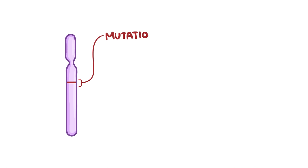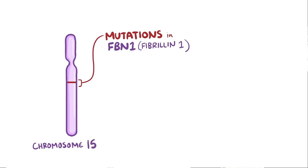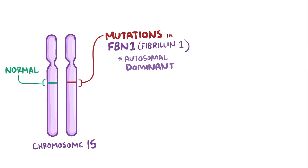Marfan syndrome is caused by mutations in a gene called FBN1, or fibrillin 1, on chromosome 15. Marfan syndrome is autosomal dominant, which means that even if there's a normal copy of the gene, a single mutated copy of the gene — in other words a heterozygous mutation — is sufficient to cause the disease.